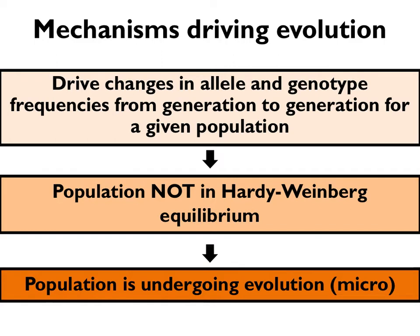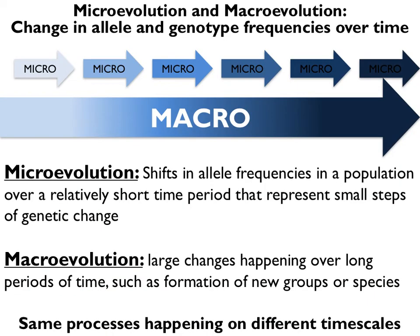If we're just looking from one generation to the next or over several generations, this would be looking at microevolution — changes in allele and genotype frequencies over a smaller or shorter timescale. So microevolution are changes and shifts in allele frequencies in a population over relatively short periods of time, from one generation to the next or over several generations, representing small steps of genetic change.